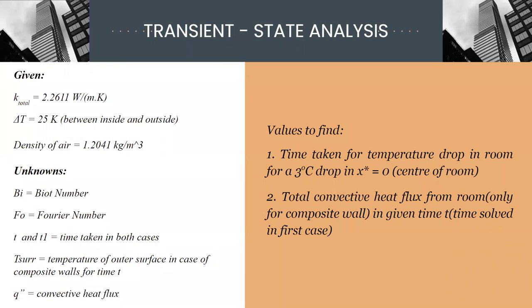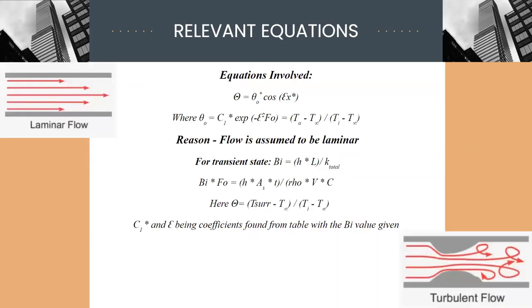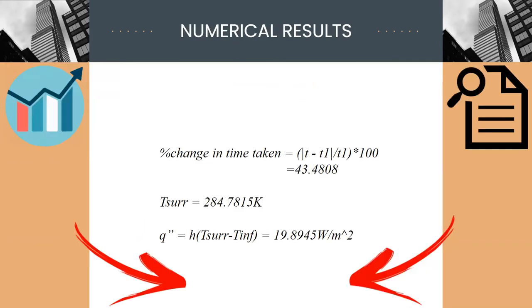Values to be found are time taken, temperature of the outer surface, and the convective heat flux respectively. These are all the relevant equations used to solve the problem. And these are the numerical results showing the percentage change in time taken, the surrounding being the temperature of the outer surface, and heat flux being the convective heat flux.